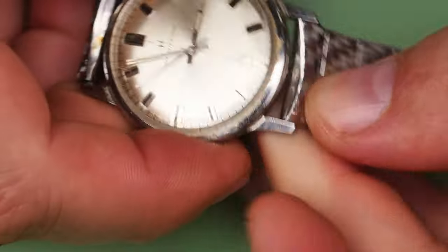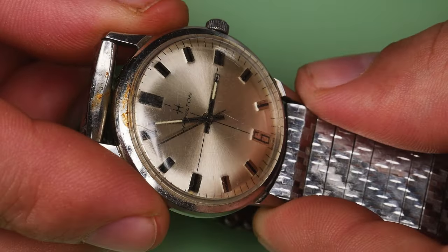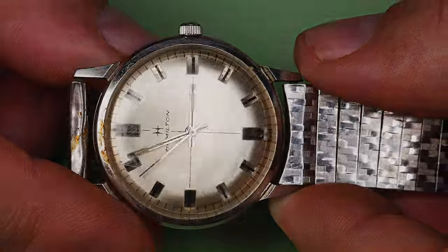The Thinline I'll be working on in this video comes with the caliber 688. It is a 17-jewel manual wind movement based on the ETA 2391. Let's get to disassembling this guy.